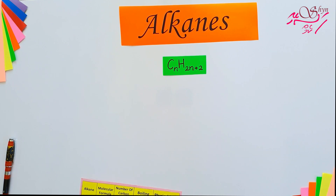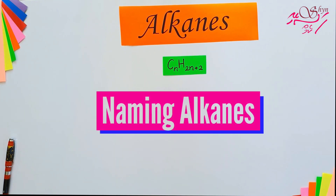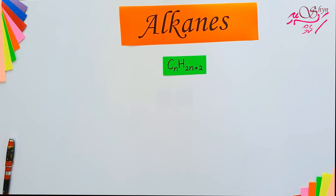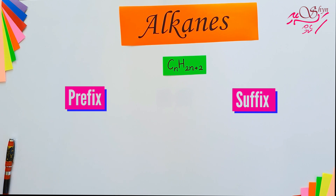Now let's recall the general naming of organic compounds that we have already covered in the previous video. The names of organic compounds consist of two parts: the prefix and suffix. The prefix indicates the number of carbon atoms and the suffix tells the functional group or to which series it belongs.